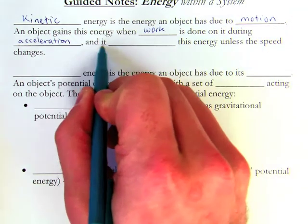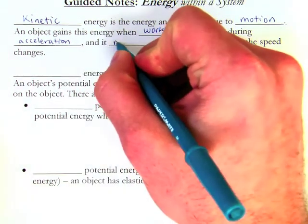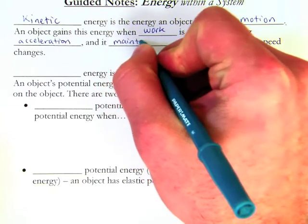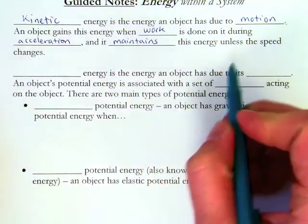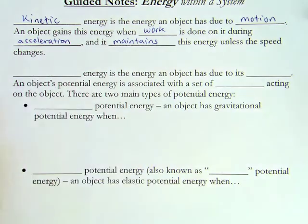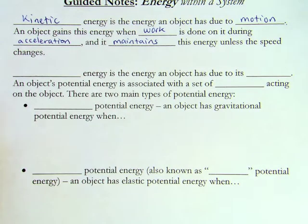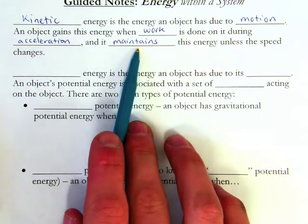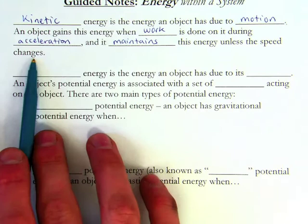That object maintains this energy unless the speed changes. So this is another version of Newton's first law. An object in motion will remain in motion unless a force acts upon it. So the kinetic energy is maintained unless the speed changes.